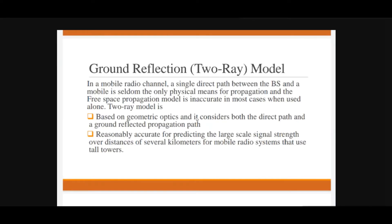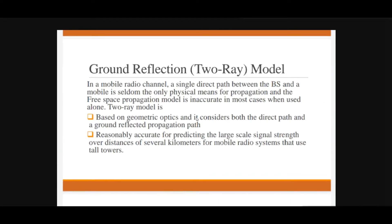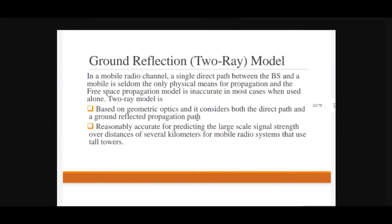Now, ground reflection — the two-ray model. In the mobile radio channel, a single direct path between base station and mobile station is rarely the only path, as obstacles exist. The free space propagation model is therefore inaccurate in most cases. The next model is the two-ray model, also known as the ground reflection model. It is based on geometric optics and considers both the direct path and the ground-reflected propagation path, and is reasonably accurate for predicting large-scale signal strength over distances of several kilometers for mobile radio systems using tall towers.